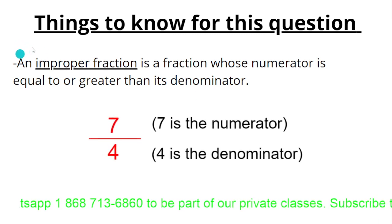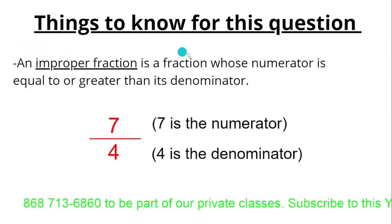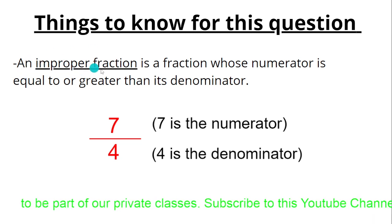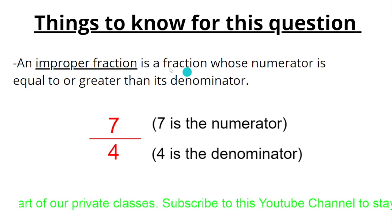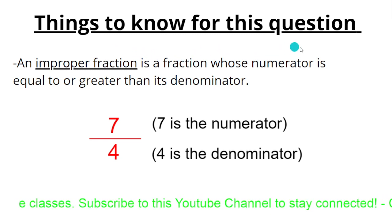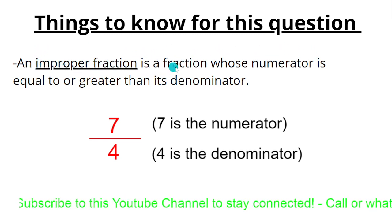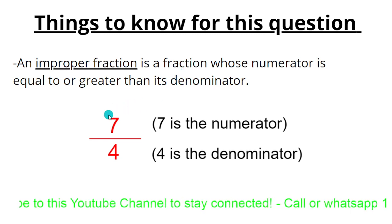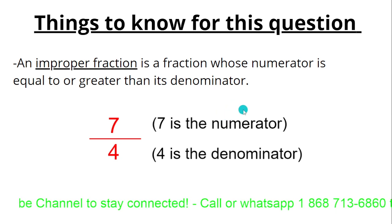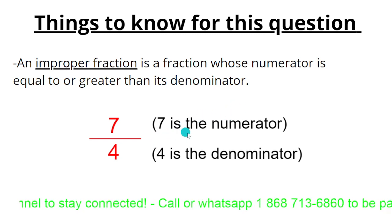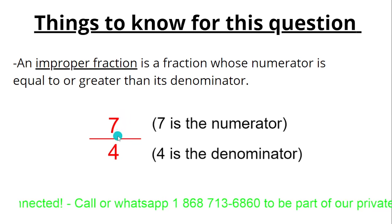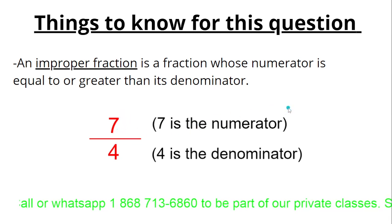You also need to know what an improper fraction is. An improper fraction is a fraction whose numerator is equal to or greater than its denominator. For example, seven over four — seven is the numerator and four is the denominator. Since seven is greater than four, that is an improper fraction.